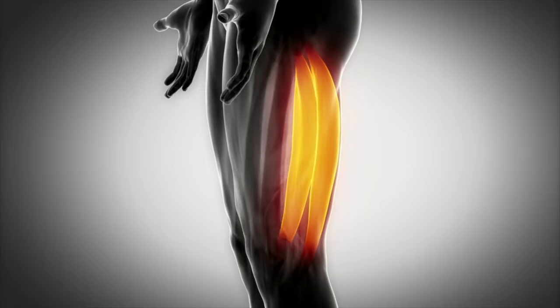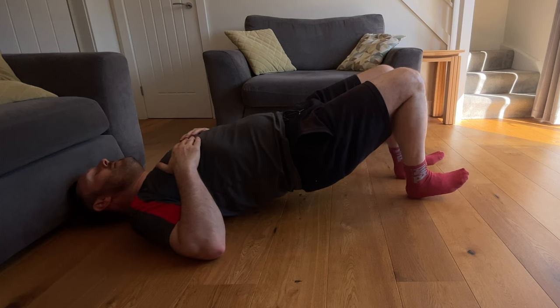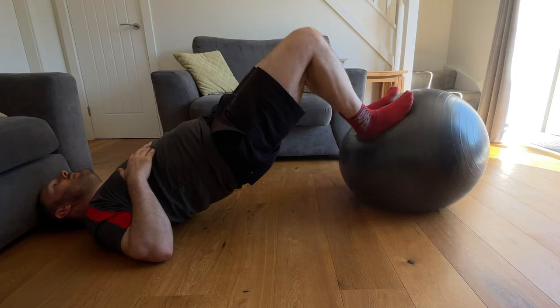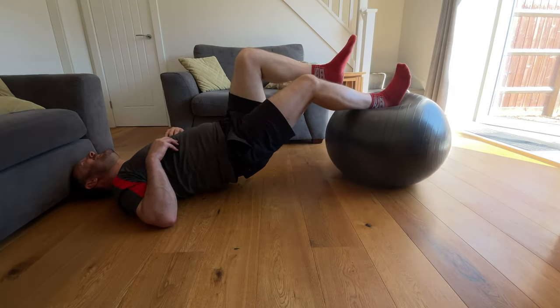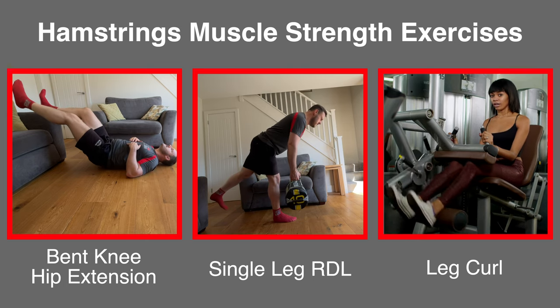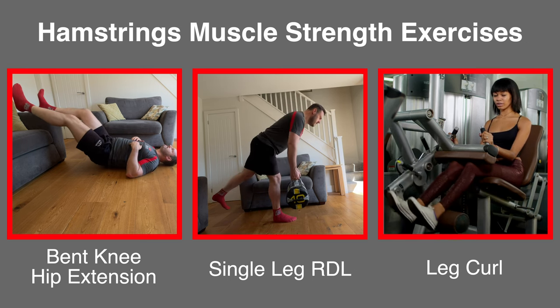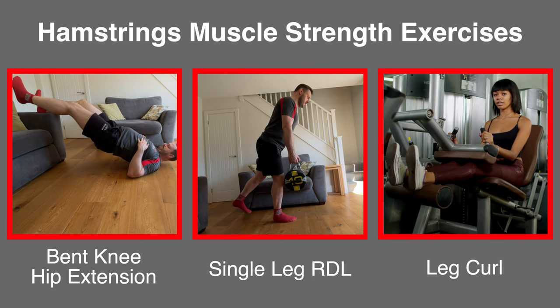It's also good to target the hamstring muscles at this stage. Heel slides with the hips elevated, either with feet on the floor or on a Swiss ball, can be a great way to isolate the hamstrings. Start with both legs and progress to isolating the affected leg to make it harder. Other useful exercises include a lying bent-knee hip extension, a single-leg Romanian deadlift, or using a leg curl machine in the gym. Three sets of 10 reps of your chosen exercise is a good start point.